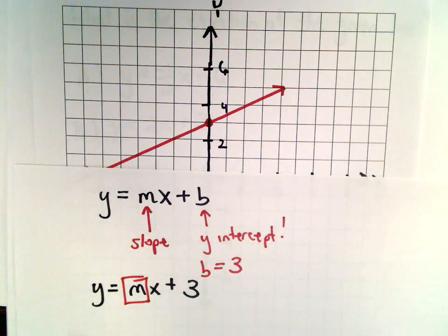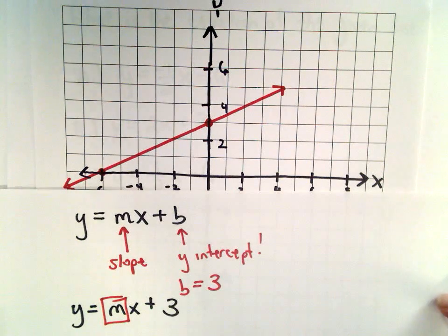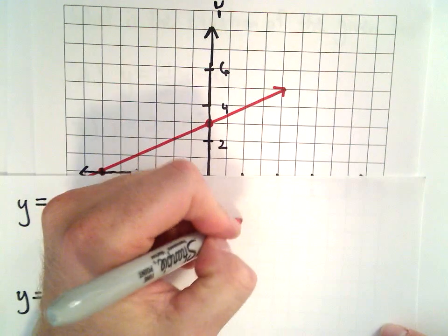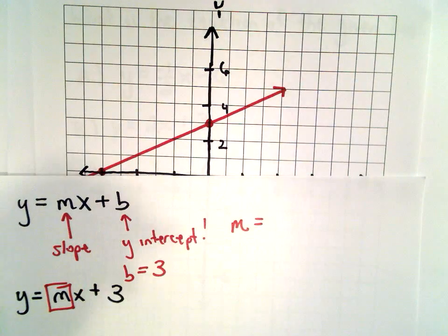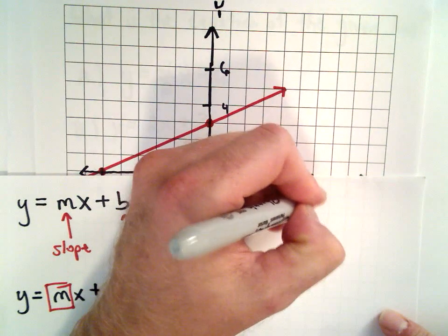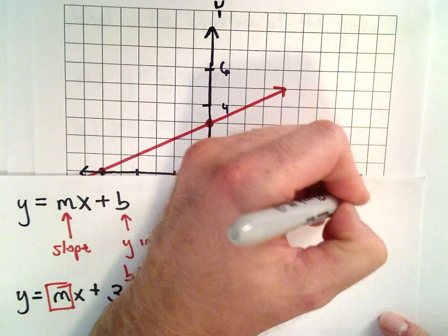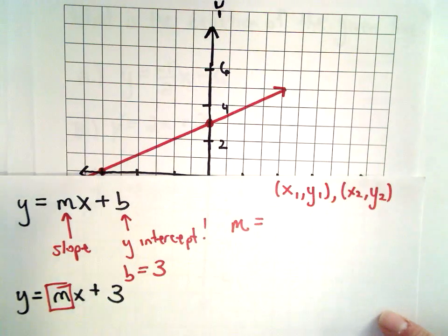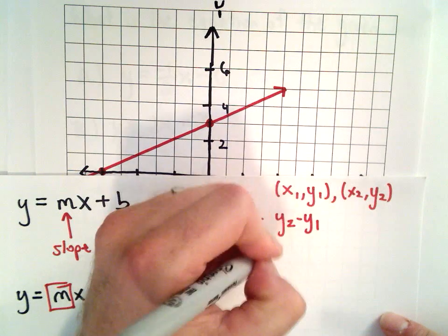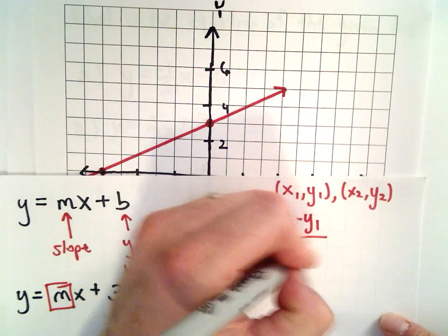So a couple different ways to get the slope. One you could count, you could do rise over run. Another way to do it is to use the formula to calculate slope. It says if you know two points on the line, we'll call them x1 and y1, and x2 and y2, we can do y2 minus y1 divided by x2 minus x1.